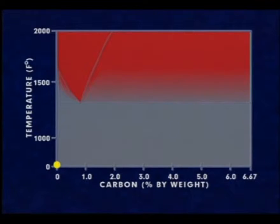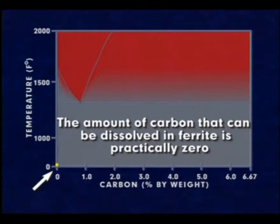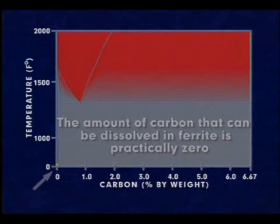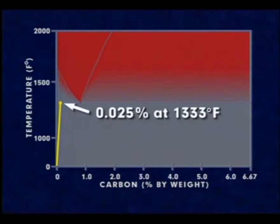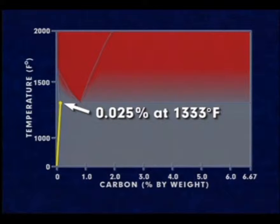At room temperature, the solid solubility — or the amount of carbon that can be dissolved in ferrite — is practically zero. The amount of carbon dissolvable in ferrite increases to only a maximum of 0.025% at 1,333 degrees Fahrenheit.